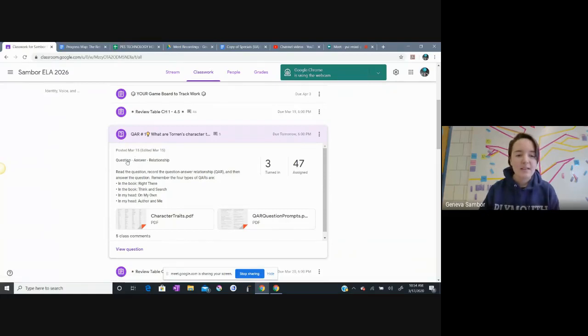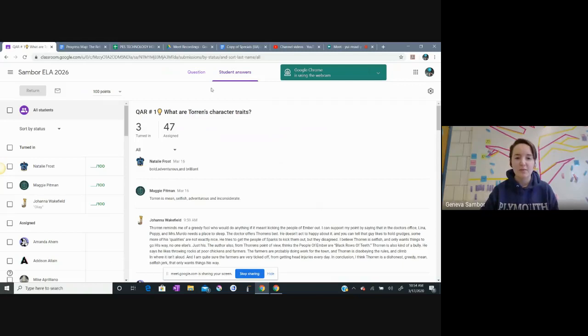And I see the instructions here: question, answer, relationship. And then I see, remember the four types of QARs are in the book right there, in the book think and search, in my head on my own, and in my head author and me. I don't know what that is, so I think I'm going to click on this resource here. But first, I'm going to click view questions so that I can expand the page for myself. I'm going to go to view question, and this is what I see here. Same thing, but bigger.